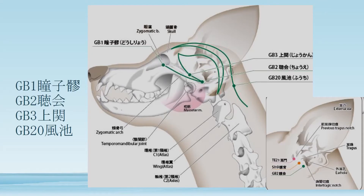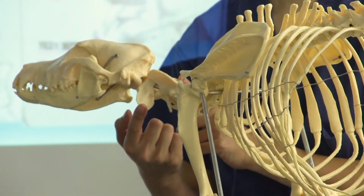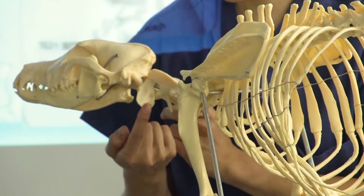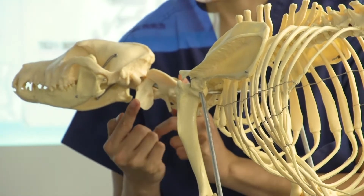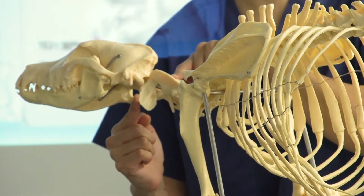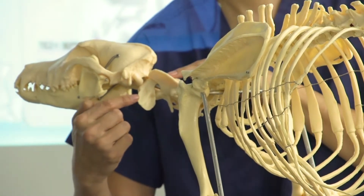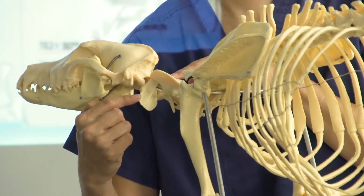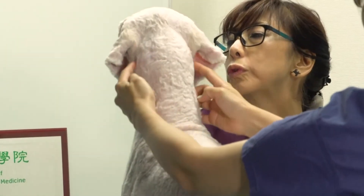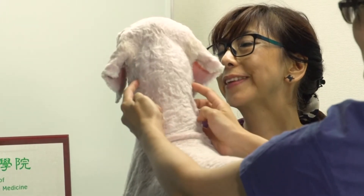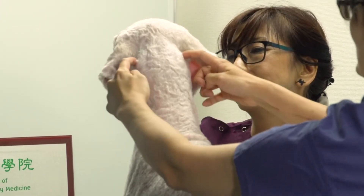GB20 is in the depression medial to the cranial margin of the atlas wing, a little inside the cranial margin of the atlas wing.